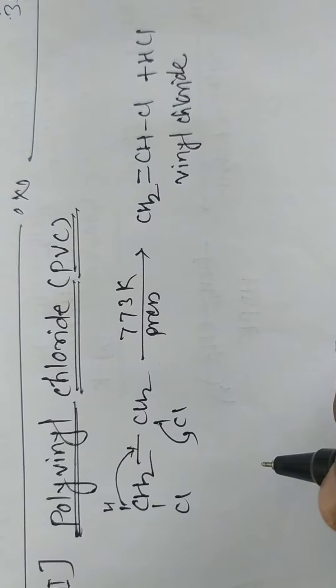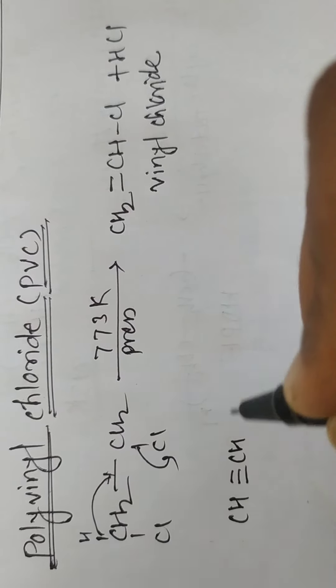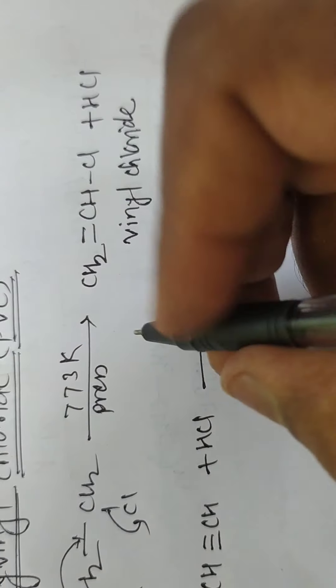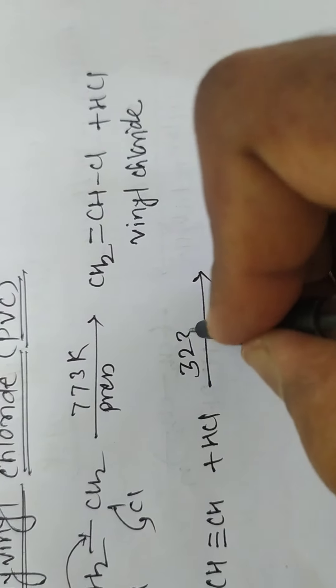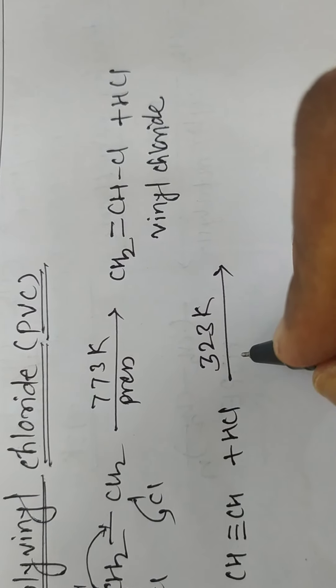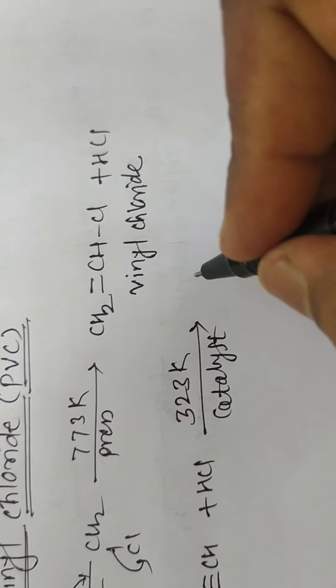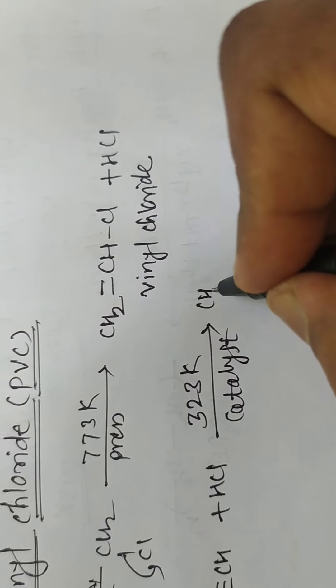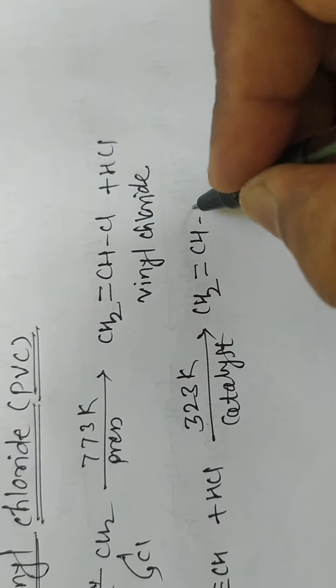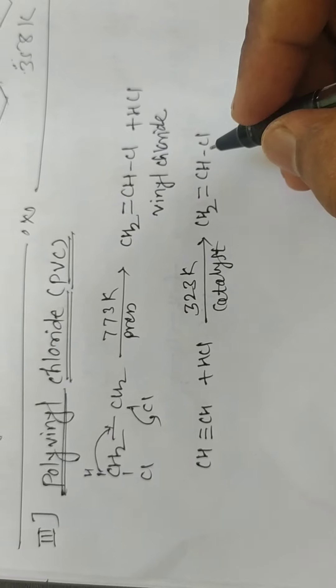Vinyl chloride is also prepared by reacting acetylene, CH triple bond CH, with HCl in presence of a catalyst at 323 Kelvin. Here you can get CH2 double bond CHCl, which is also vinyl chloride.